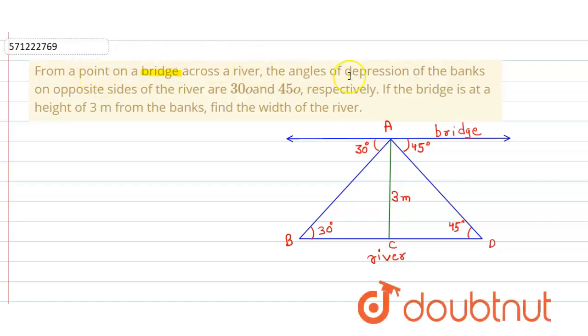In the given question, from a point on the bridge across the river, the angle of depression of the banks on opposite sides of the river are 30 degrees and 45 degrees. If the bridge is at a height of 3 meter from the bank, then we have to find the width of the river.